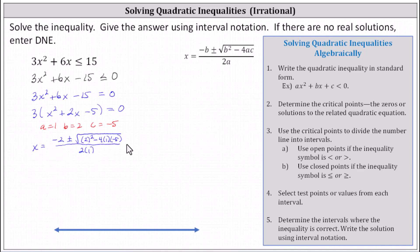Simplifying further, we have negative two plus or minus the square root of four plus 20, or 24, all divided by two. Now we need to simplify the square root of 24.